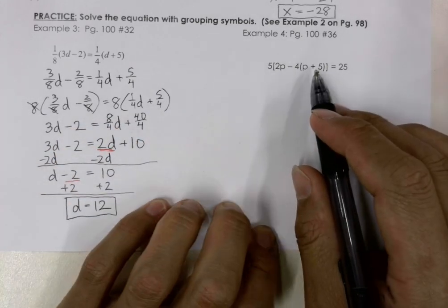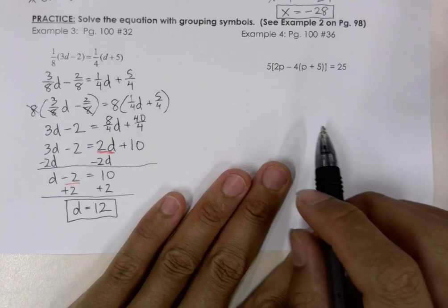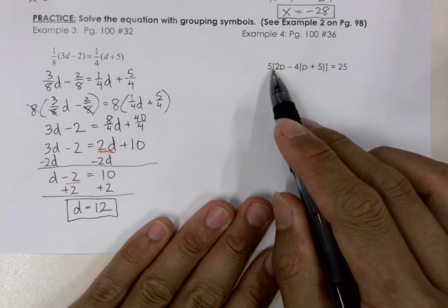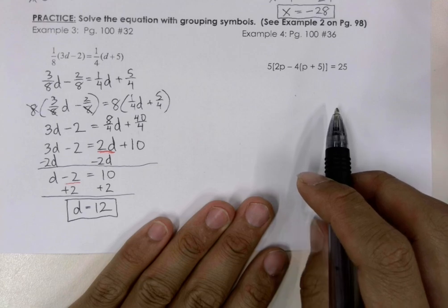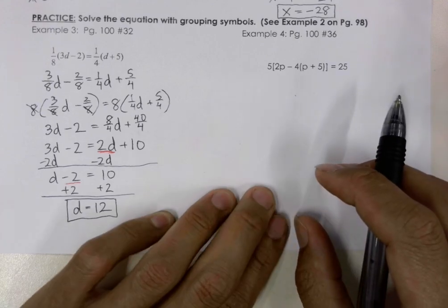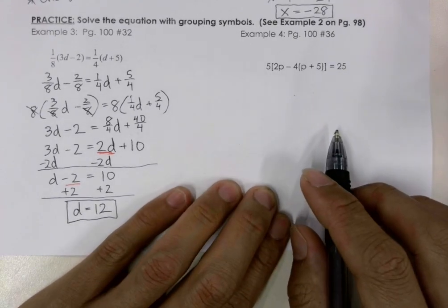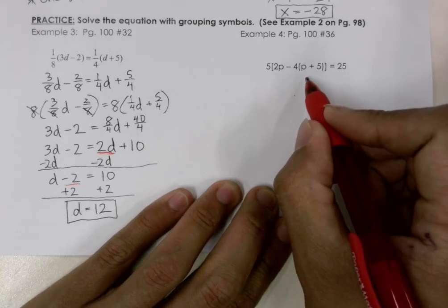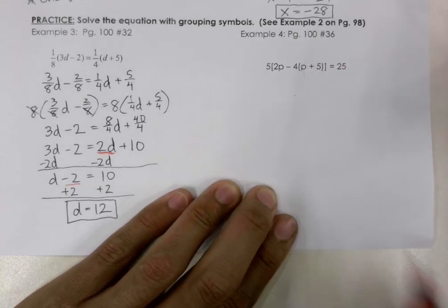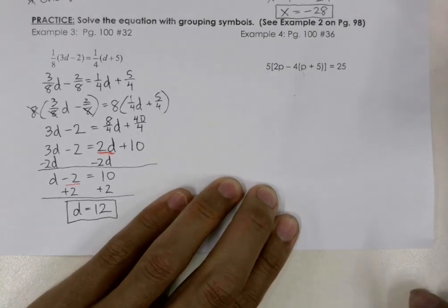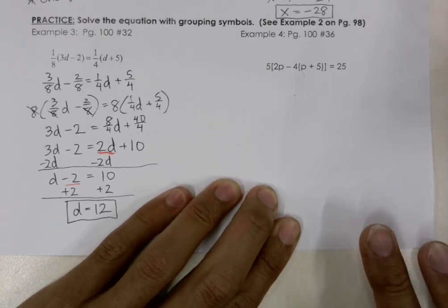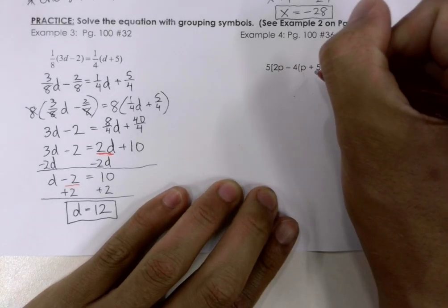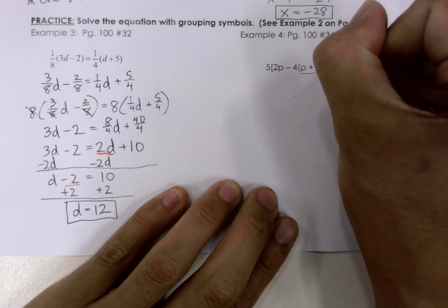We have another grouping problem. We have parentheses here, and we also have brackets. We're going to solve this problem by starting with our parentheses. PEMDAS is parentheses, exponents, multiplication, division, addition, subtraction — so first we start with the parentheses right in here.